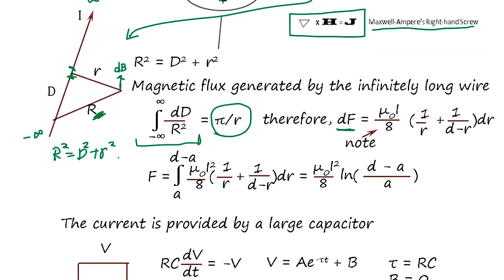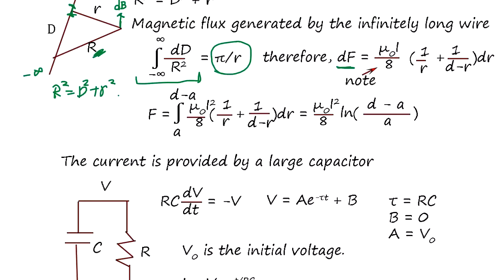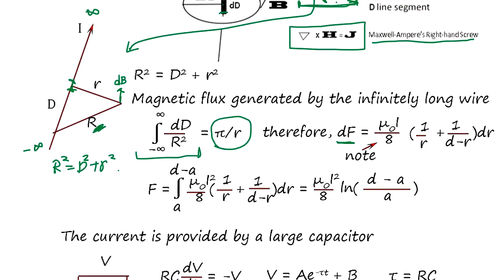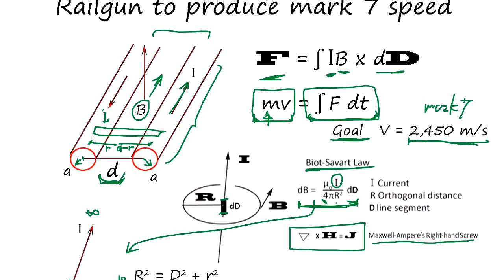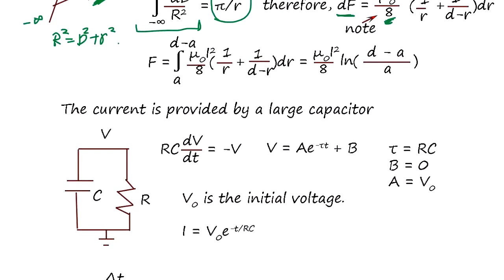The pi terms cancel and the force becomes proportional to 1/R + 1/(D minus R), where R is the distance from the center and D minus R is the other distance. The coefficient changes from 4 to 8 because in a railgun the conductor doesn't extend from negative infinity — the sliding starts at one end, so we take only half the effect.